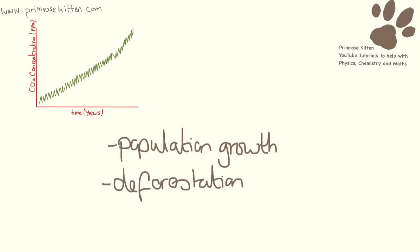The other reason is deforestation. Plants take carbon dioxide out of the atmosphere because of photosynthesis, but if we're cutting down all of the trees, if we're cutting down all of the forest, there are fewer trees there to take carbon dioxide out of the atmosphere, which is going to lead to an increase in the amount of carbon dioxide in the atmosphere.